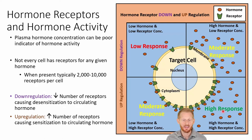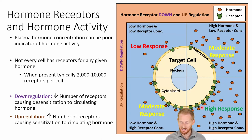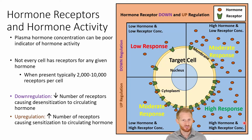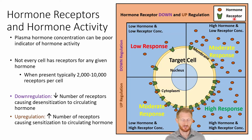In order to get a high amount of hormone activity, you want a lot of hormone floating around the bloodstream and a high number of receptors on the cells. This gives you a maximum amount of hormone binding to receptors at any one point in time and a maximum amount of that hormone's activity. This shows how it's not just the amount of hormone in the bloodstream, but also the number of receptors that affects hormone activity — both are necessary for a high response.